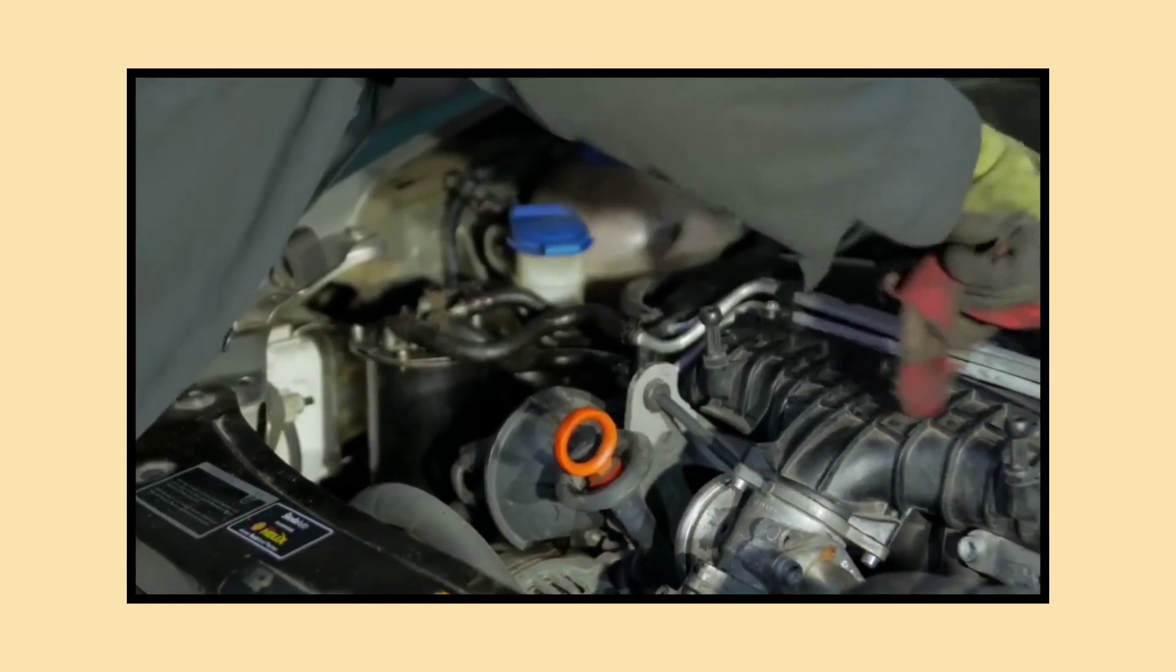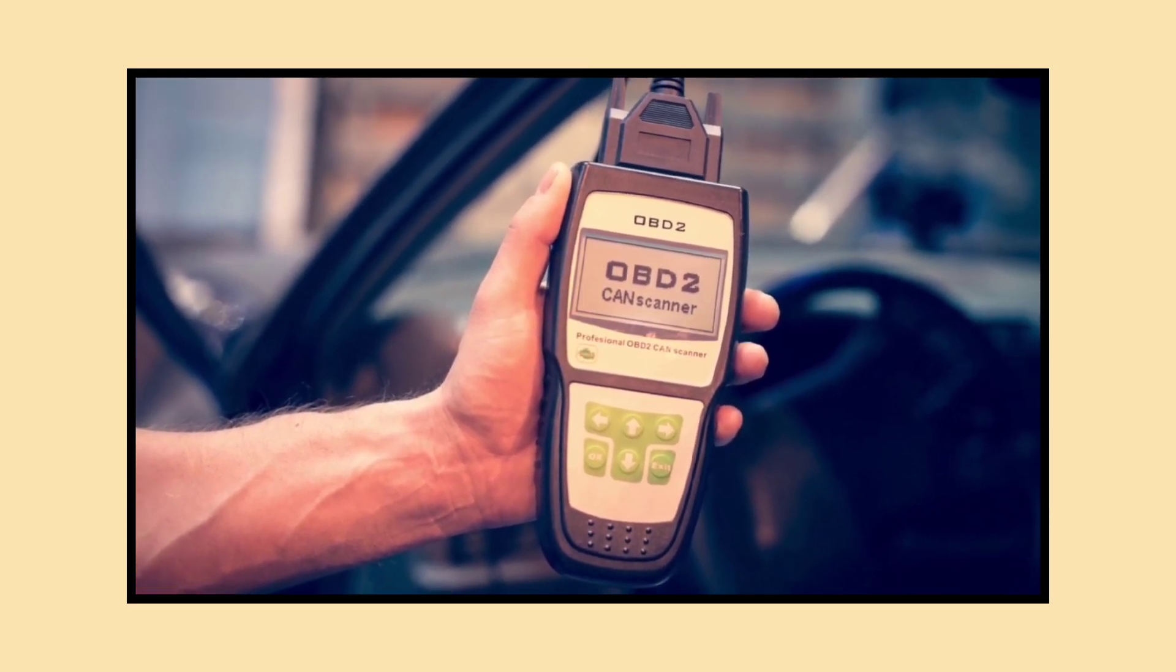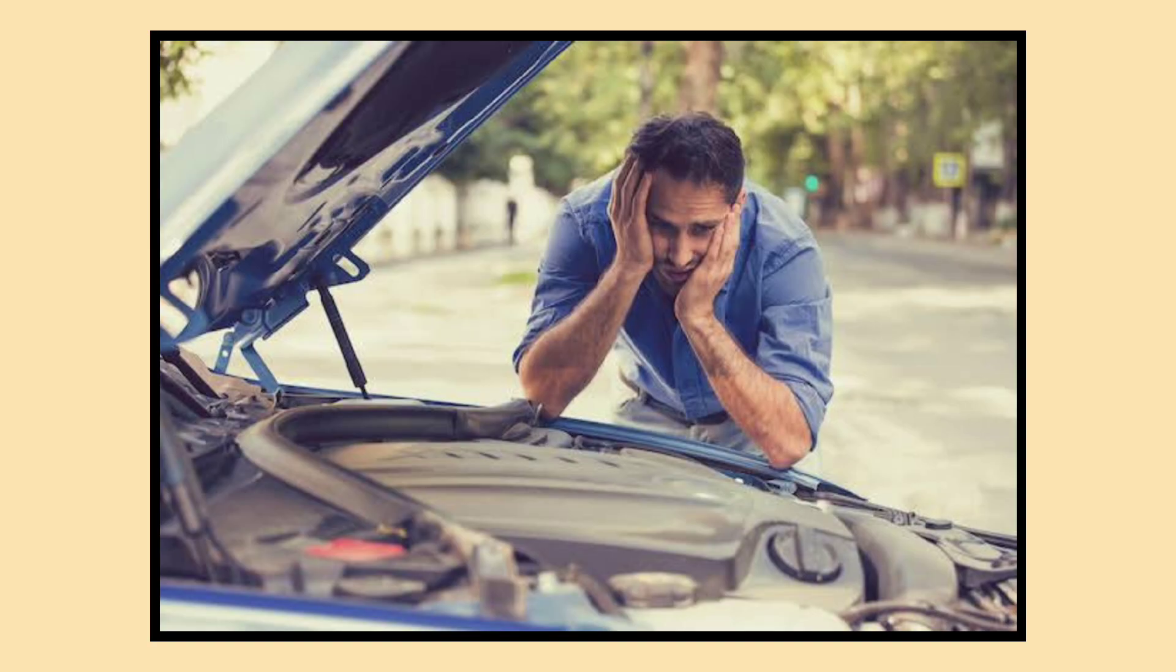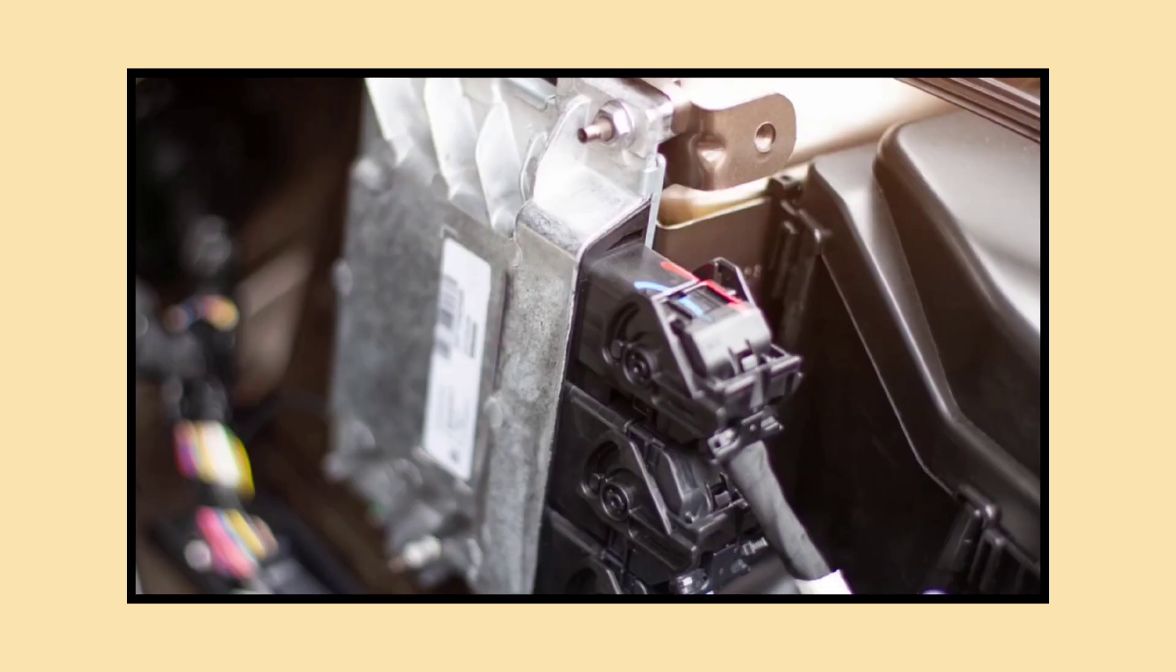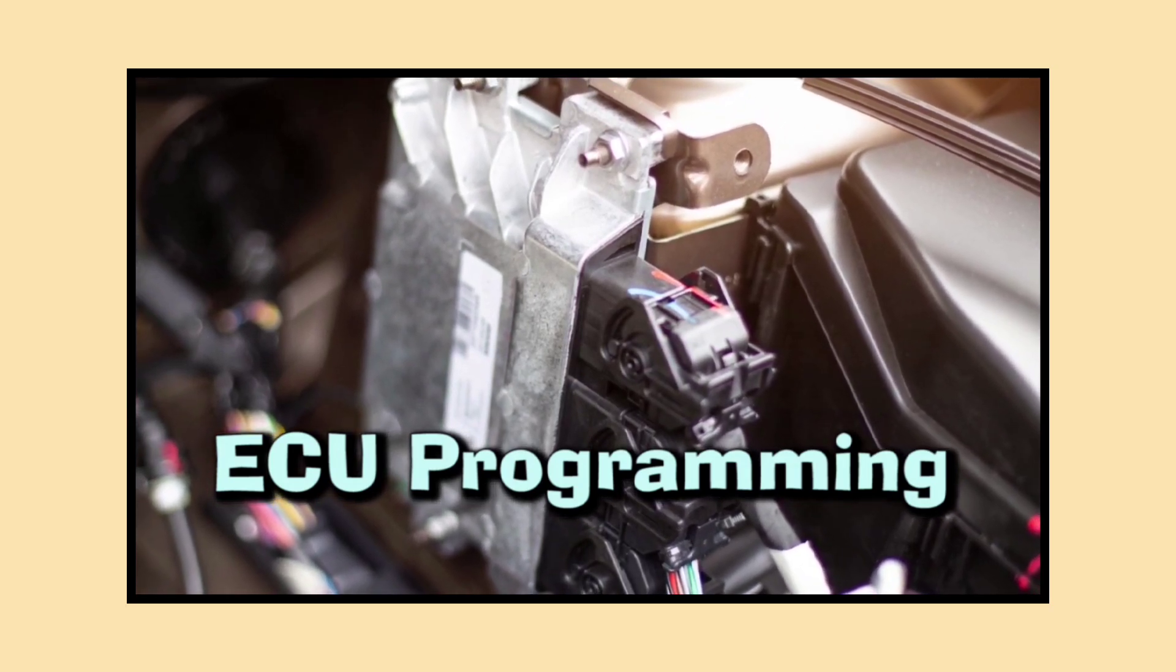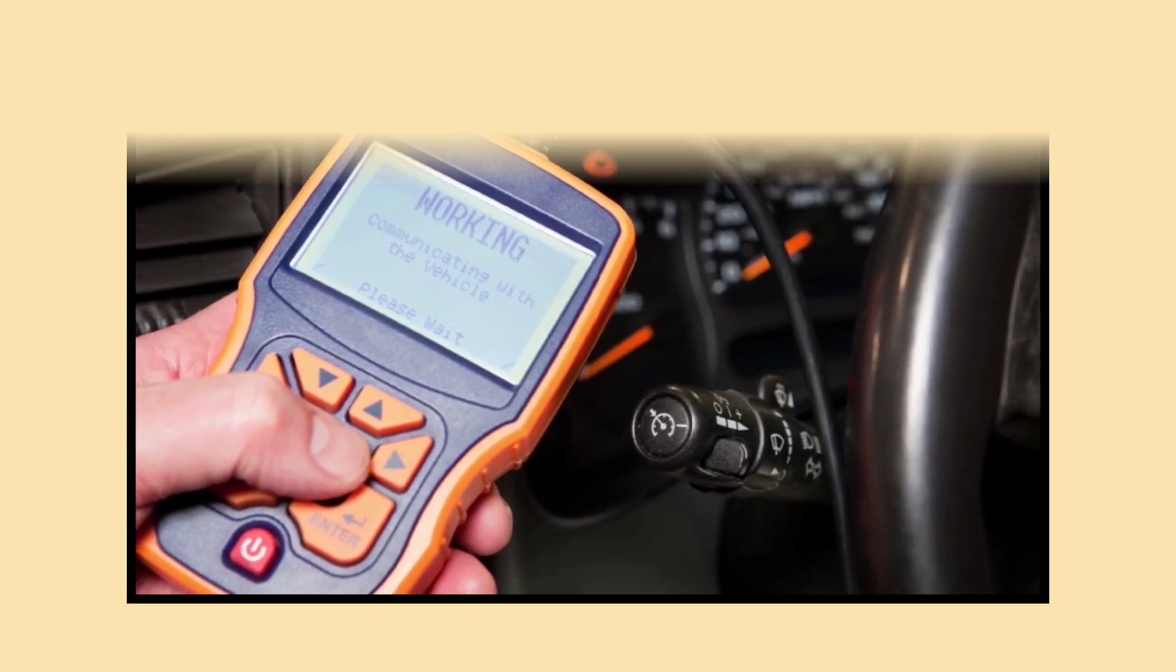Like any technology, ECUs can encounter problems. Common signs of ECU issues include a check engine light, poor acceleration, or decreased fuel efficiency. If you suspect an ECU problem, here's what to do: grab an OBD-II scanner. This handy tool reads the error codes stored in the ECU, giving you a clue about what's wrong. Always start with visual inspections to check for damaged wires or loose connections.